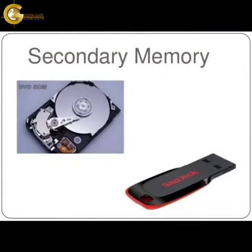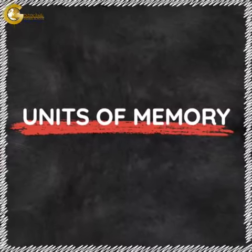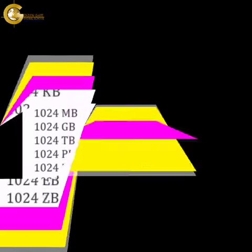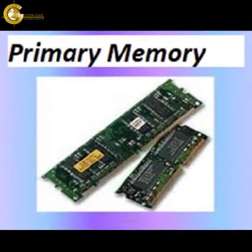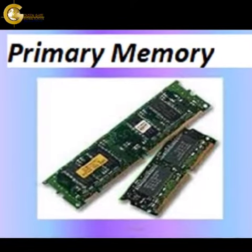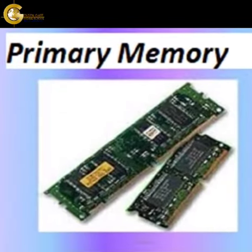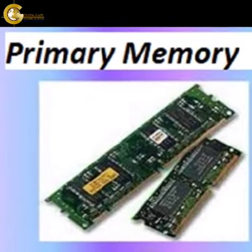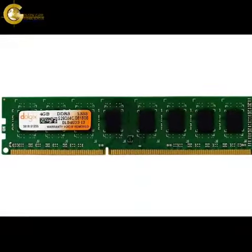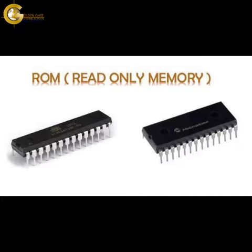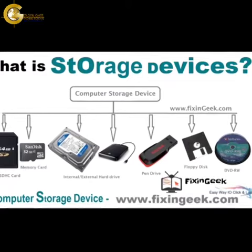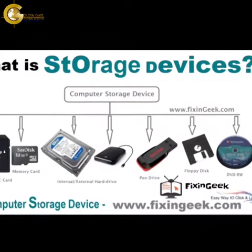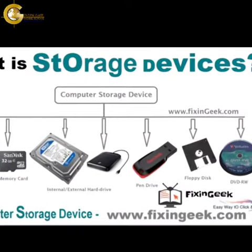These are the units used in a computer system. The main or primary memory of the computer system is of two types: Random Access Memory (RAM) and Read-Only Memory (ROM). Storage devices, or secondary memory devices, are used because of the limited storage capacity of primary memory.